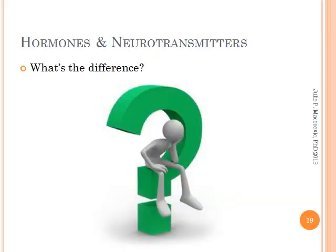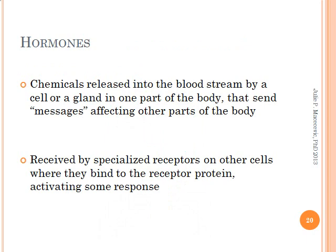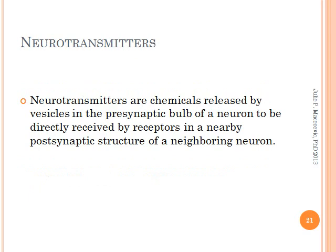Now let's move on to neurotransmitters and hormones — first of all, what's the difference? We know both are chemicals inside our bodies that play major roles in bodily function. Hormones are chemicals released into the bloodstream by a cell or a gland, mostly endocrine glands. A hormone travels in the bloodstream until it encounters target cells that are sensitive to their particular shape and structure and have specialized receptors. Insulin, for example, is produced by the pancreas and distributed to target cells throughout the body — especially in the liver, the skeletal muscles, and adipose tissues — for the purpose of decreasing blood glucose levels. Neurotransmitters, on the other hand, are chemicals moving via impulses in neurons in our central nervous system.